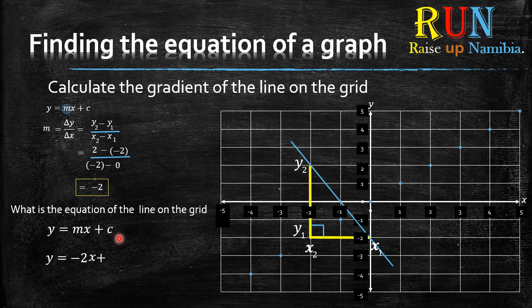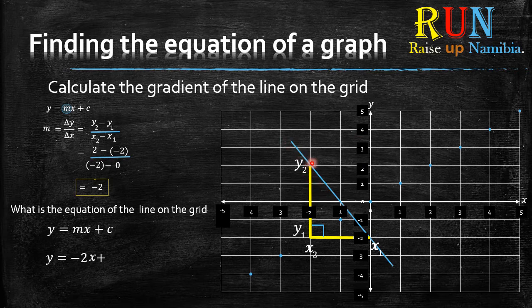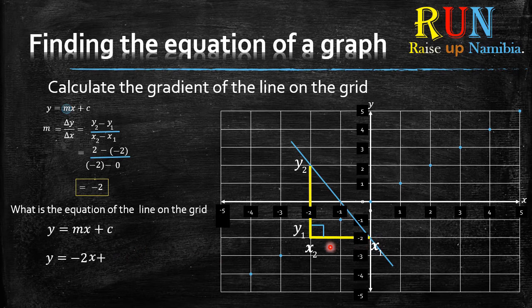Now what is c? C is your y-intercept, meaning where does that particular line cross the y-axis. So we check, this line crosses the y-axis here, which is negative two. So because it's negative two, I'll put it into brackets.